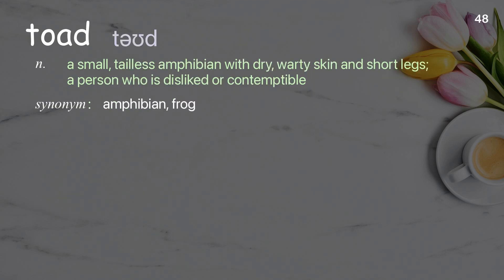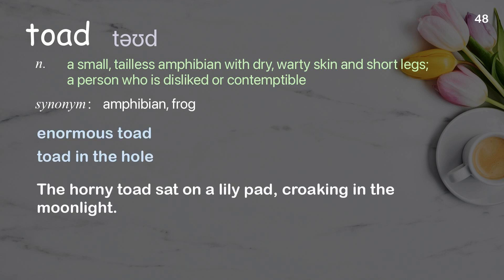Toad: A small, tailless amphibian with dry, warty skin and short legs; also refers to a person who is disliked or contemptible. Examples: Enormous toad. Toad in the hole. The horny toad sat on a lily pad, croaking in the moonlight.